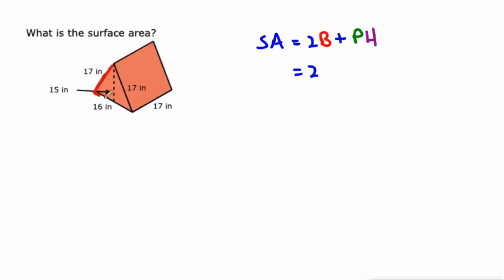Let's figure out the area of the base first. It's a triangle, so area of the triangle is one half base times height, or one half the 16—half of 16 is 8—times the height, which is 15. So 8 times 15 is 120.